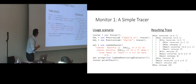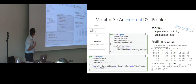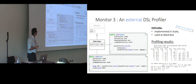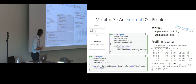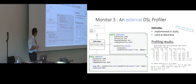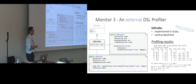For the user scenario, we were able to integrate with an external tool, DSProfile, which is a profiler implemented in Scala, that we used as a black box with minimum requirements for integration. Basically these are two functions — one line of code here and two lines of code here — pretty good, and we get decent profiling results.